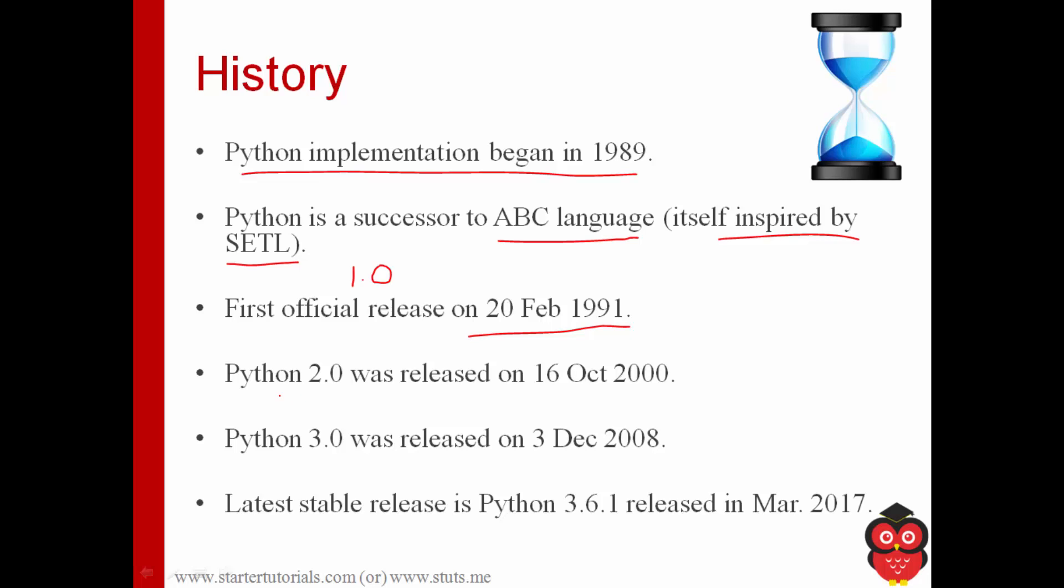And first official release, Python 1.0 was on 20th February 1991. Another, that is next major release 2.0 was on 16th October 2000. And another major release 3.0 was on 3rd December 2008. And the current latest stable release is Python 3.6.1 which was released in March 2017.